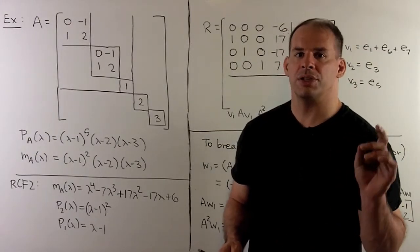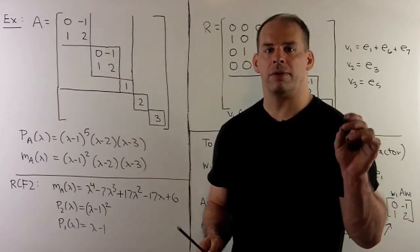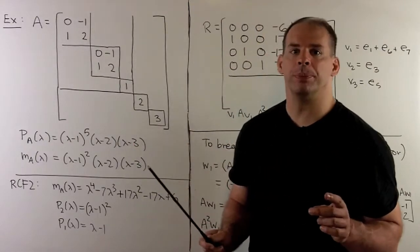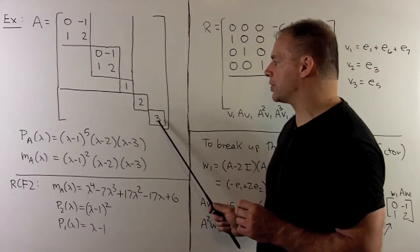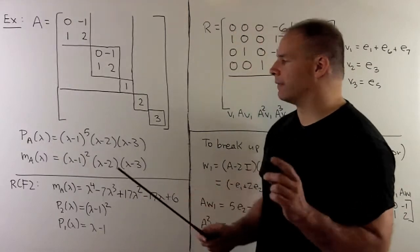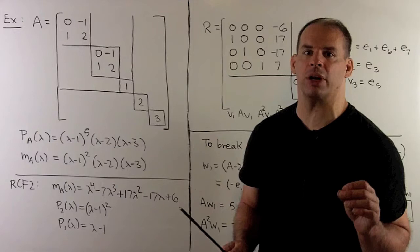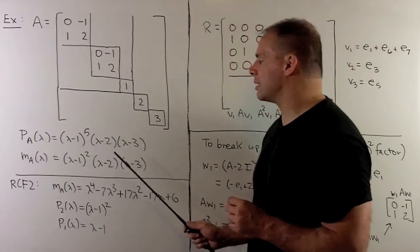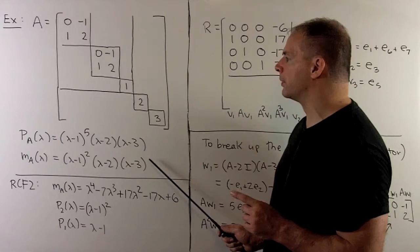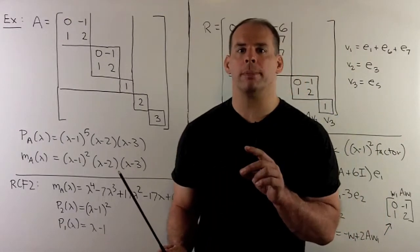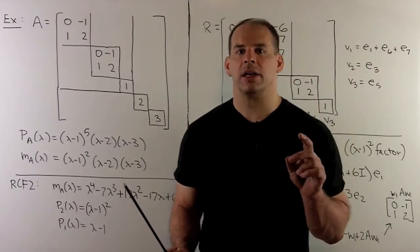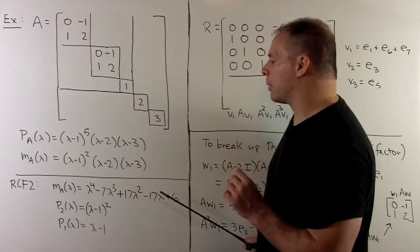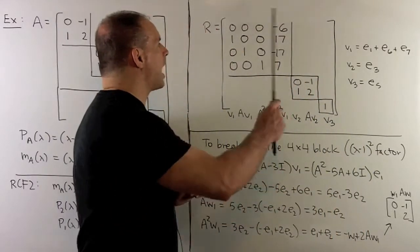For another example, consider the following matrix A in rational canonical form in the first formulation. We have five blocks: two blocks for (λ−1)², then one block each for (λ−1), (λ−2), and (λ−3). So the characteristic polynomial is (λ−1)⁵(λ−2)(λ−3), giving three irreducible factors. The minimal polynomial is (λ−1)²(λ−2)(λ−3). In the second formulation, the largest block corresponds to this polynomial. Expanding it out, we set up a four by four block.